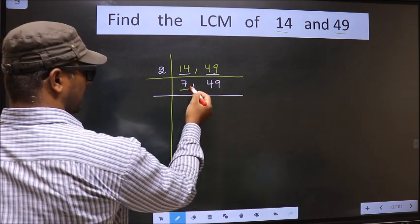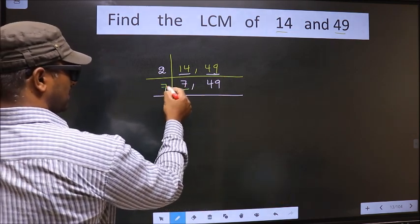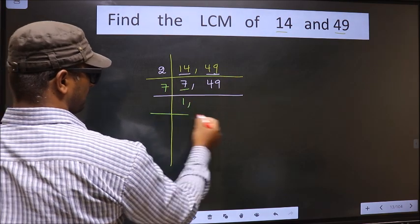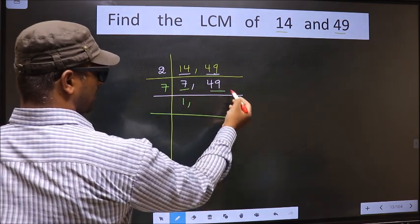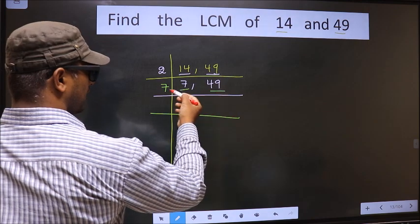Now here we have 7. 7 is a prime number. So 7 once 7. The other number, 49. When do we get 49 in the 7 table?